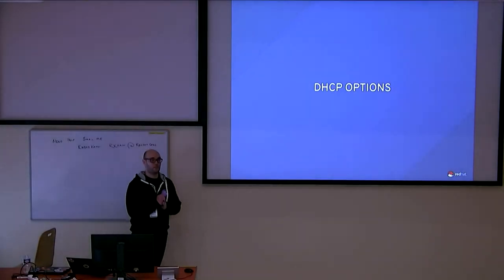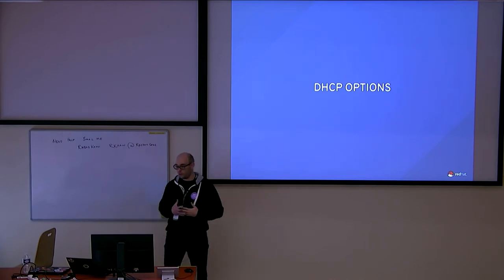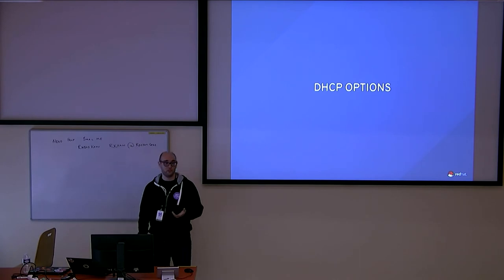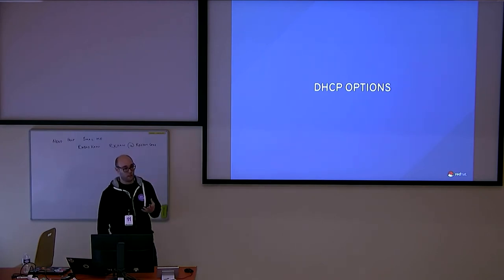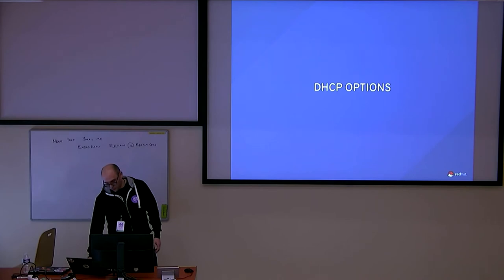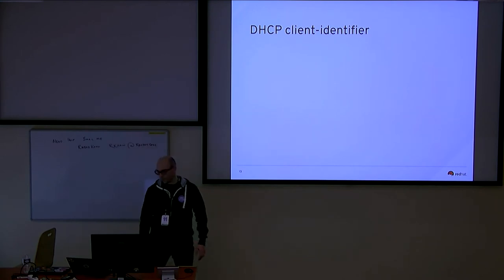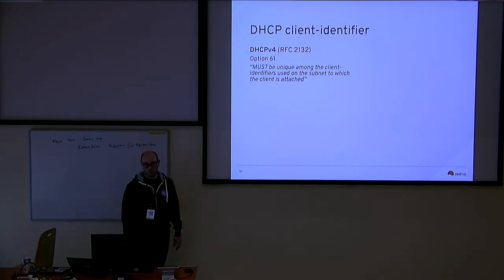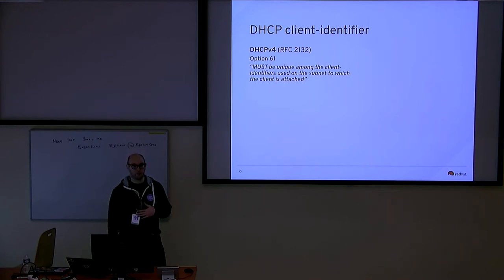What happens after association? Once you are associated to the Wi-Fi network, you will have to get an IP address in order to communicate, so you will start a DHCP request. With the DHCP request come DHCP options, and some could leak sensitive information. The first one is the DHCP client identifier. This is a mandatory option, and as the DHCP spec states, the client identifier must be unique among client identifiers used on the subnet to which the client is attached — so it's the perfect value to use for tracking.